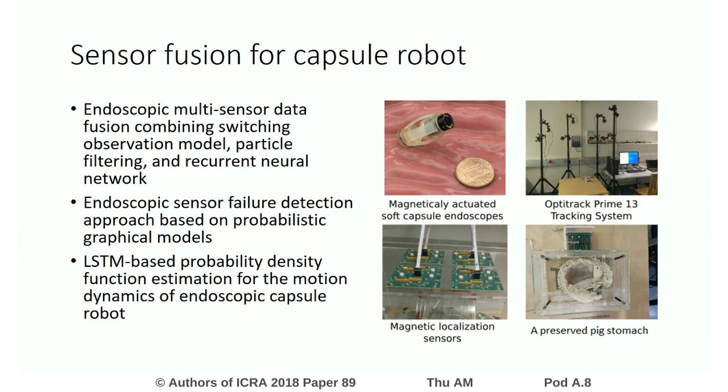We propose a sensor failure detection for capsule robots based on probabilistic graphical models with efficient proposal distributions applied onto the particle filtering, and the approach can be generalized to any number of sensors and any number of robotic platforms. No manual formulation is required to determine a probability density function that describes the motion dynamics, contrary to traditional particle filter and Kalman filter based methods.